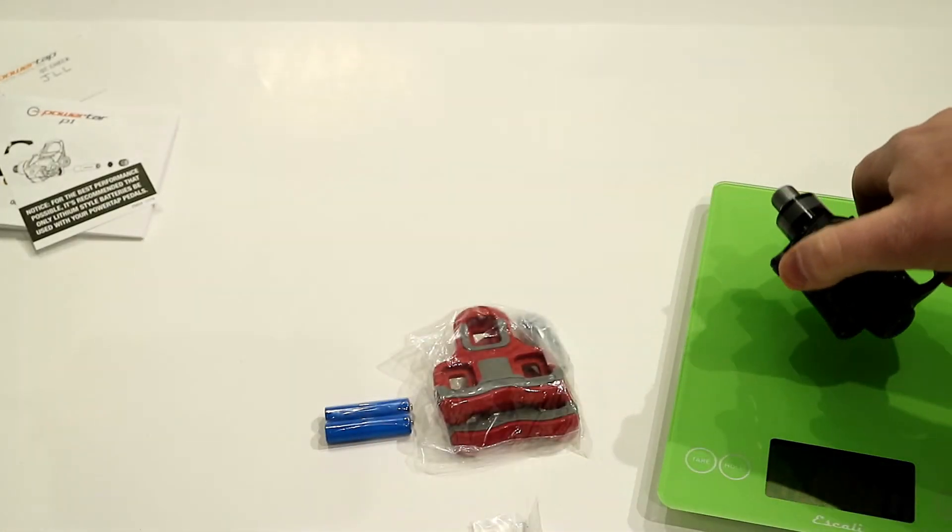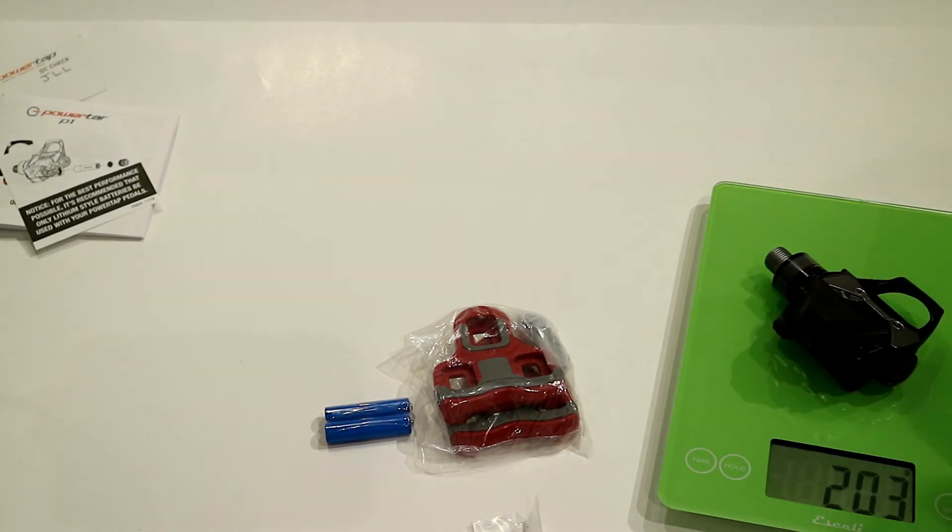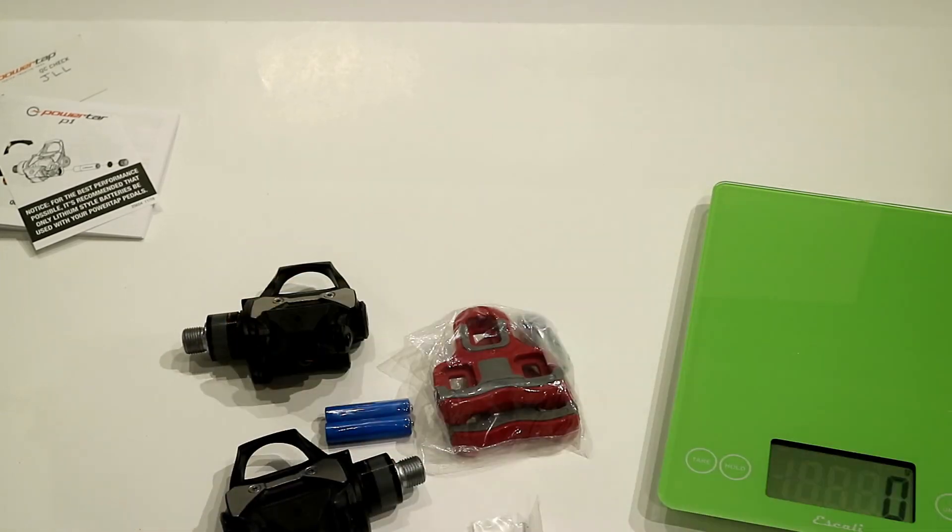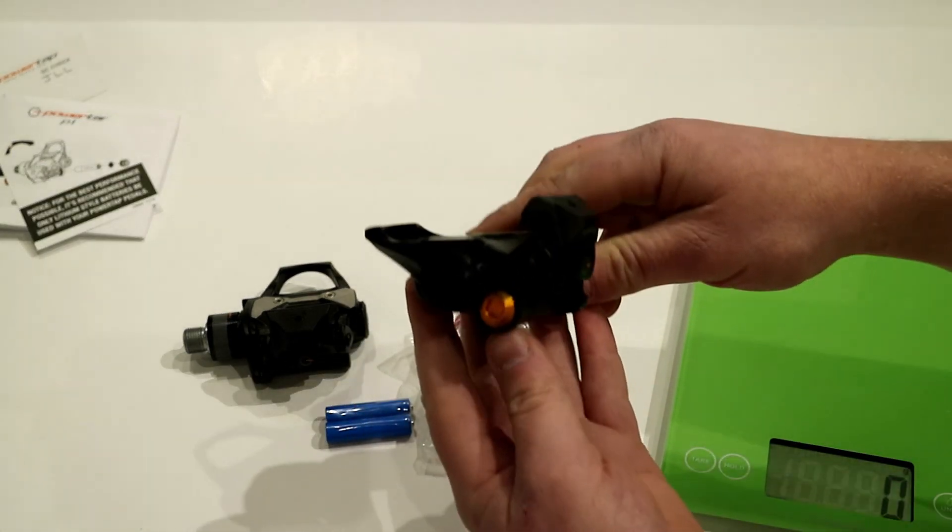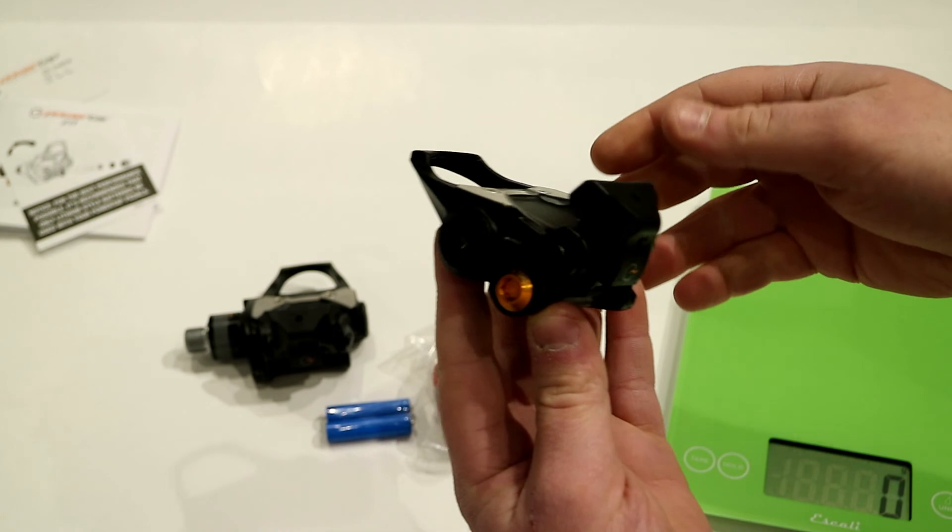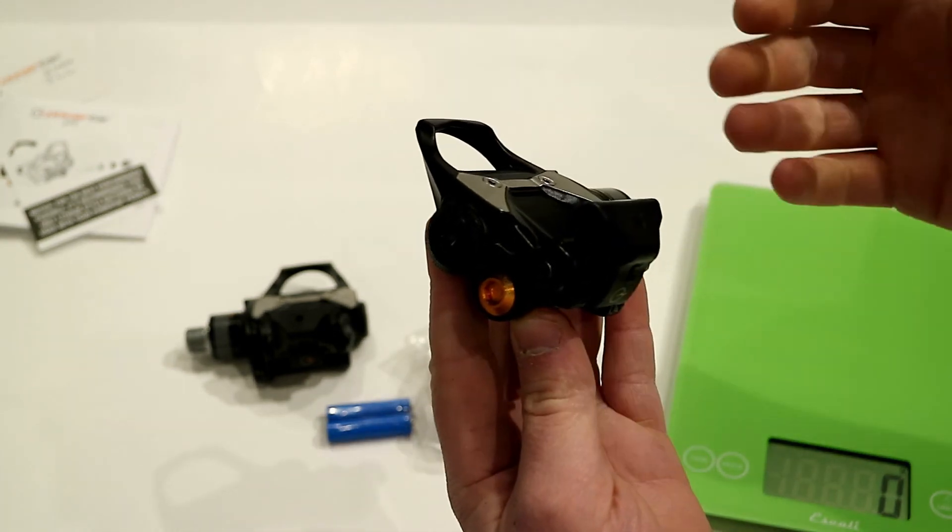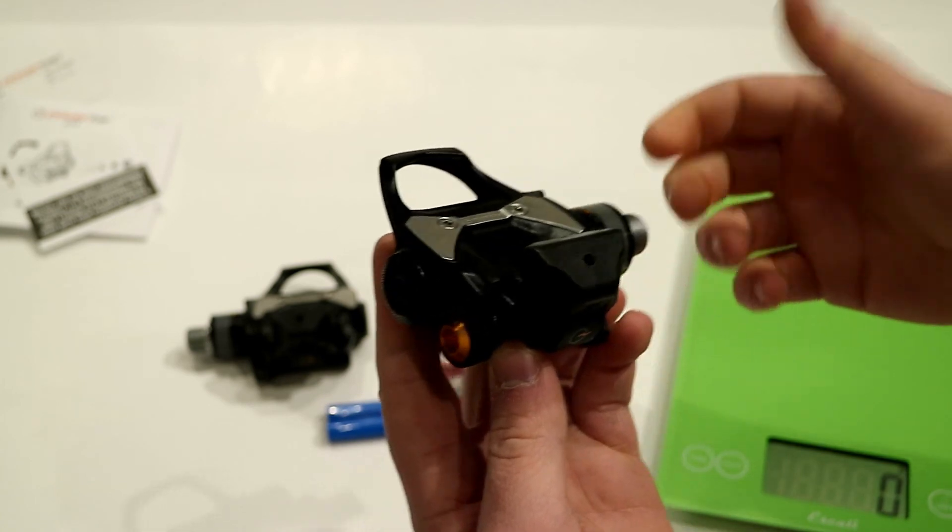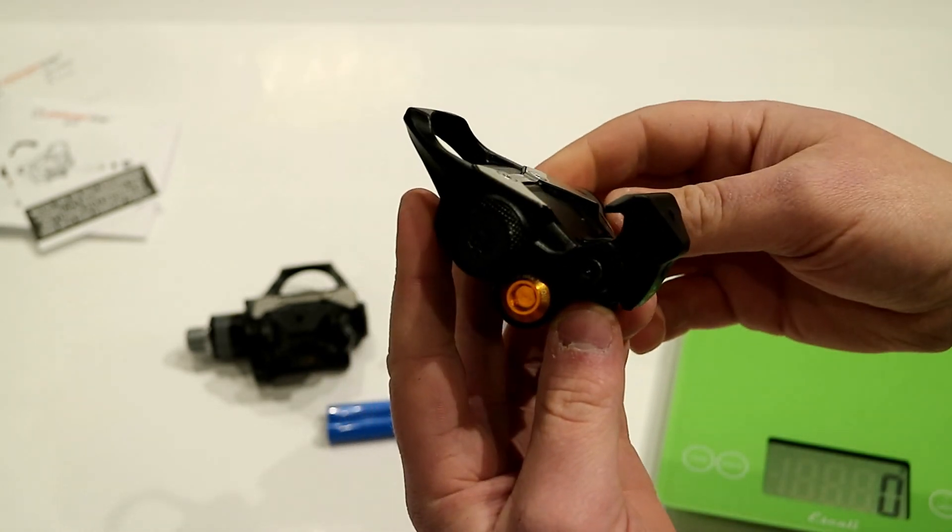And the non-power side the drive side is 203. So overall you're talking about a 409 gram pair of pedals which while not light for pedals is actually not that bad when you consider what it might add to your bike to say add a PowerTap hub or even go ahead and get a crank style crank.